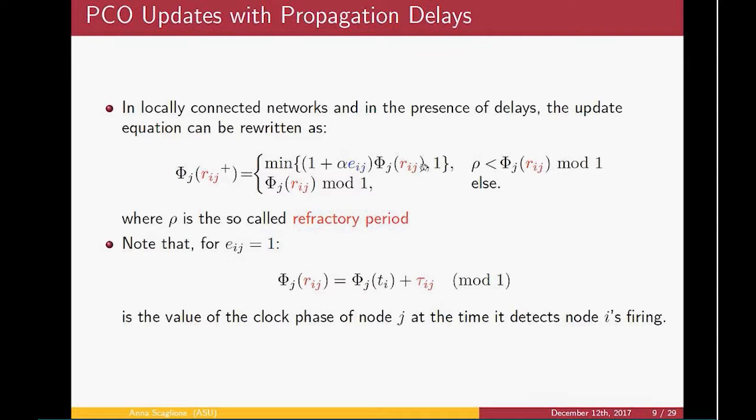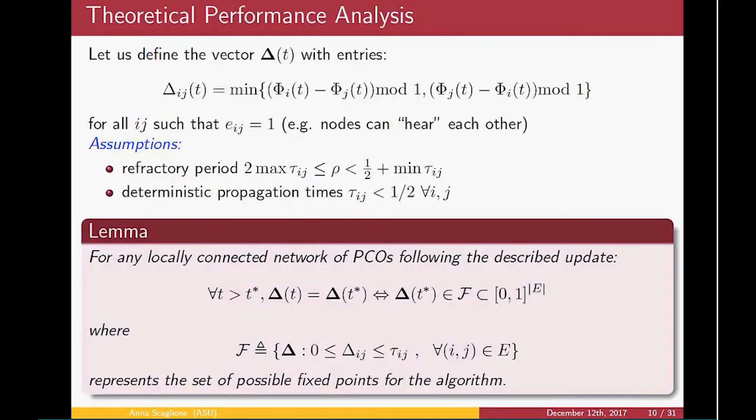In this case, when there are propagation delays, it's particularly obvious why we need a refractory period. Precisely because these firing events are not heard instantaneously, if the node were to update after the propagation delay, you would have a continuous echo effect where they would keep bouncing back and forth and update their phases incessantly. So it's clear that ρ plays an important role in the convergence of these algorithms. But interestingly, it doesn't play much of a role in terms of the accuracy.